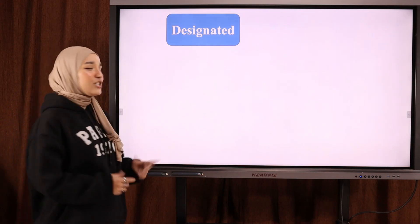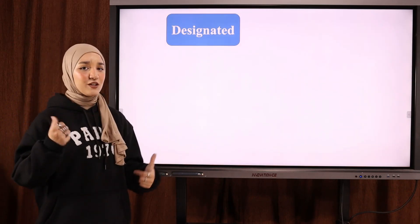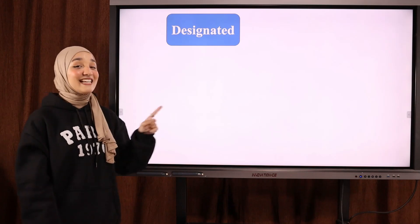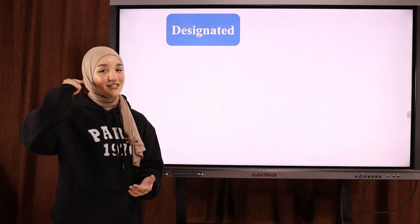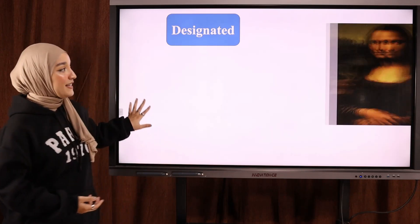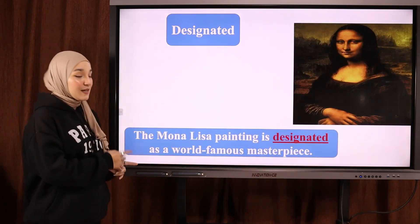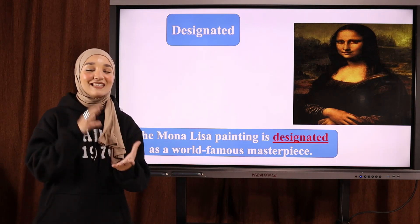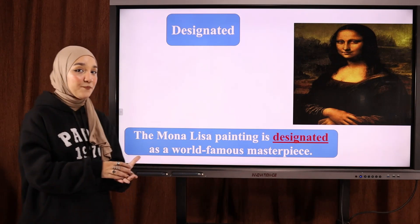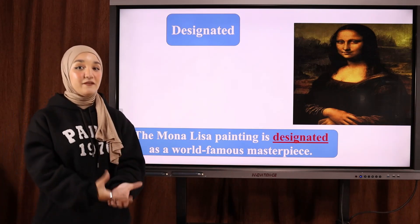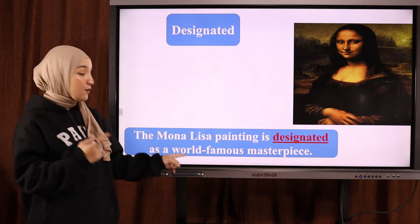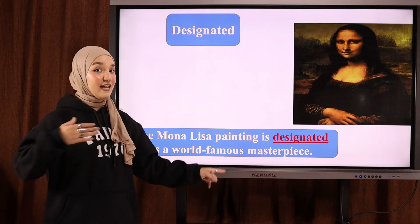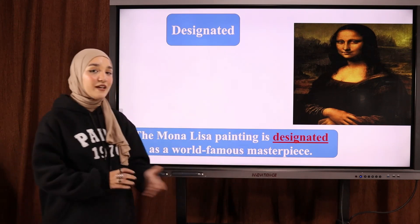The next word is 'designated', which looks similar to 'designed' but has a completely different meaning. Again with the Z sound: designated. Example: 'The Mona Lisa painting is designated as a world-famous masterpiece.' So designated means to give a title or classification to something — تعيين أو تصنيف. تعتبر لوحة الموناليسا من أشهر التحف الفنية في العالم.